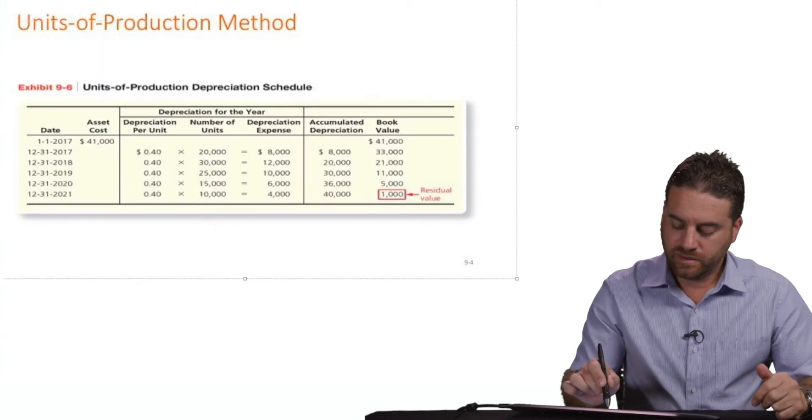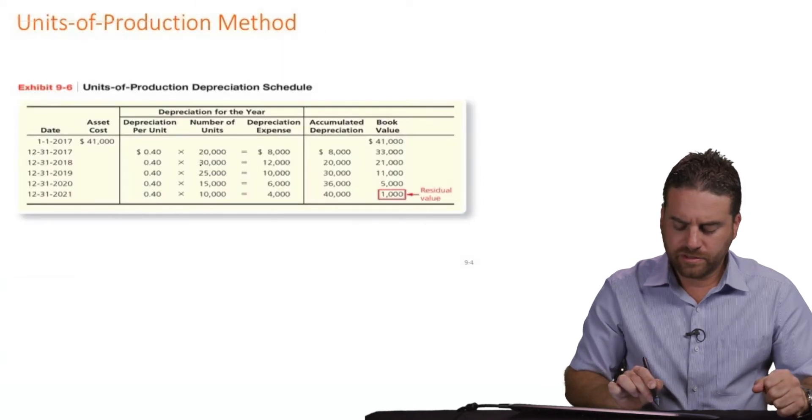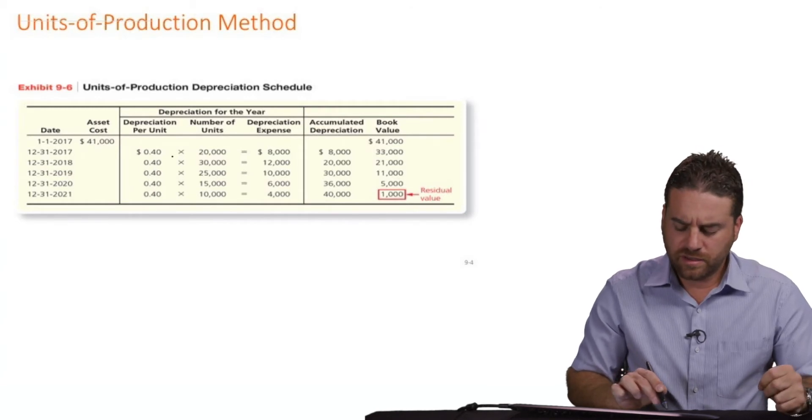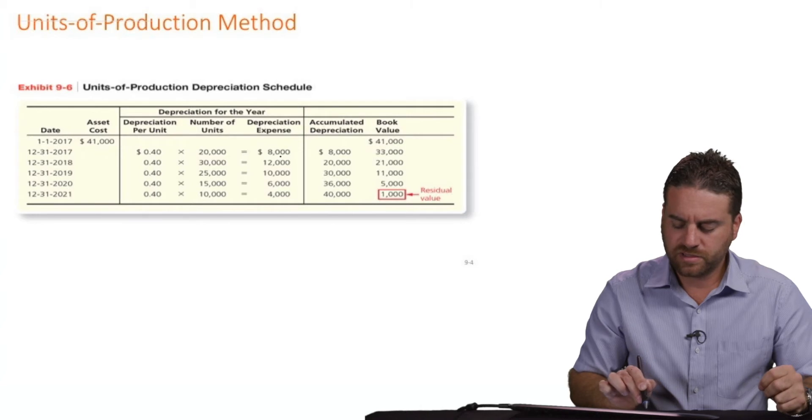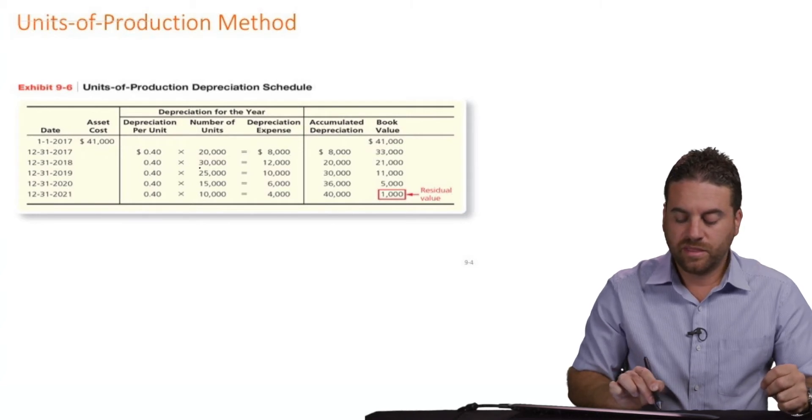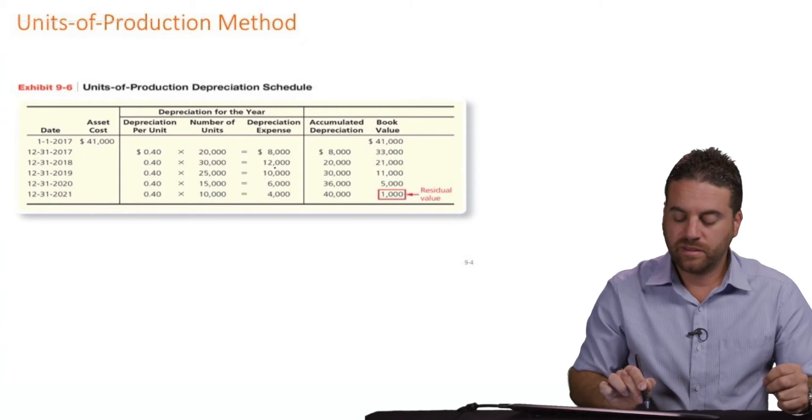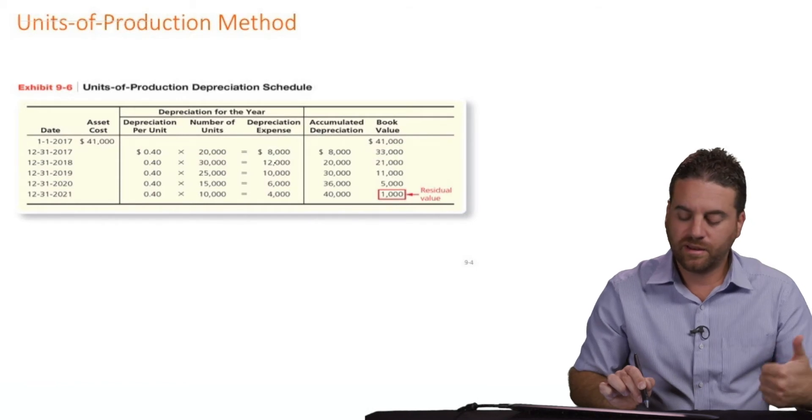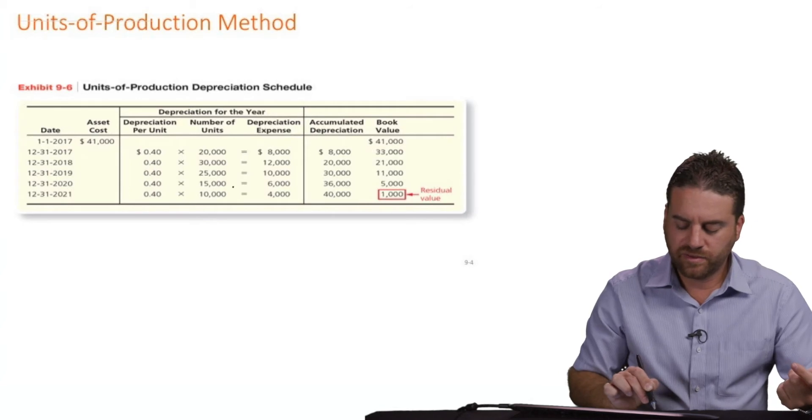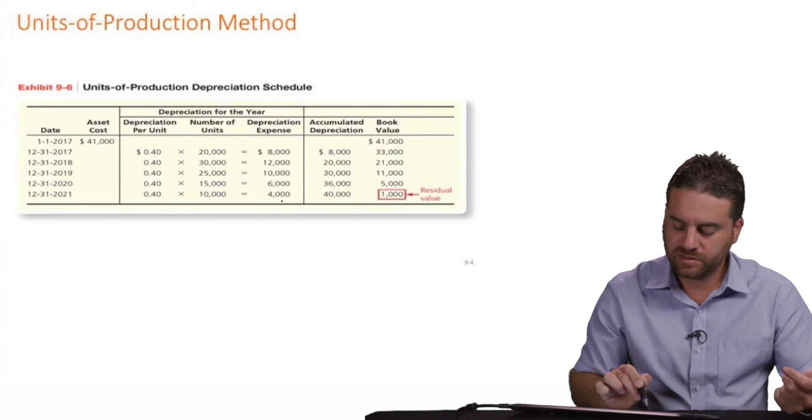And then the second year, so here's the schedule again, the depreciation schedule, but this time using the units of production. So yeah, the first year, 40 cents multiplied by 20 equals 8,000. And then the second year, 40 cents multiplied by 30,000 miles, that gives me 12,000. It's more than last year. Third year, we multiply by 25,000, fourth by 15, and then 10. Every year, we got different amount of depreciation.